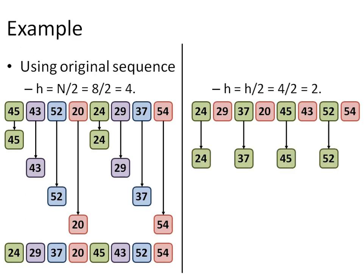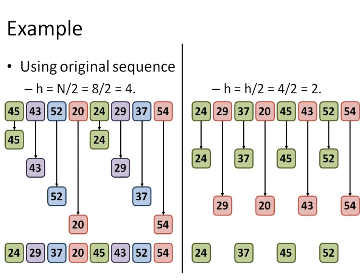First, we will have 24, 37, 45 and 52 as this sequence is already sorted. So, nothing will happen. The second sublist consisting of 29, 20, 43 and 54 will get sorted just by a single swap between 29 and 20.